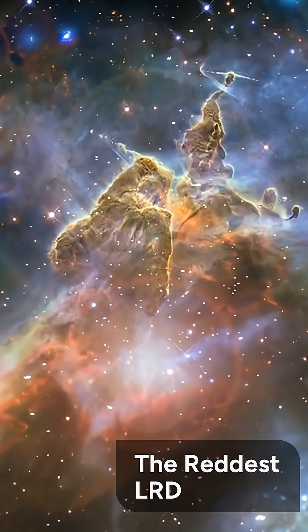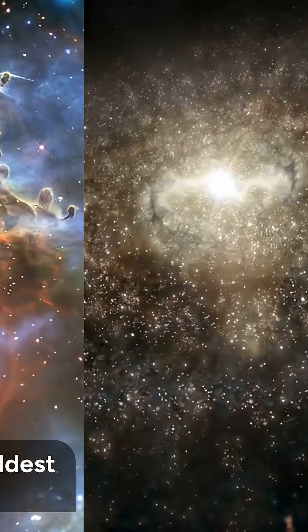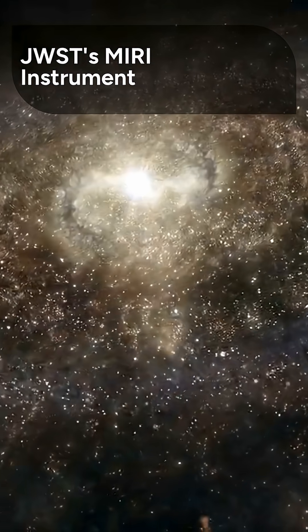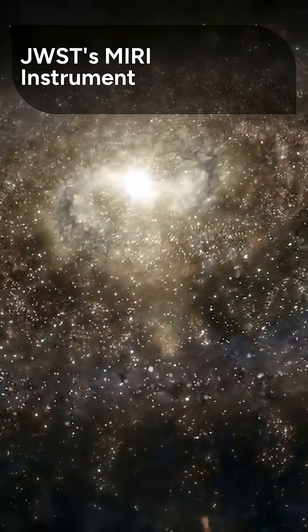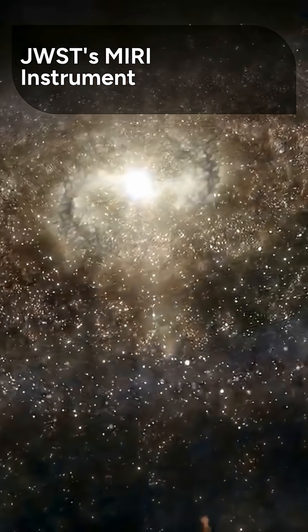Remarkably, Virgil is the reddest object found in the entire little red dot population discovered to date. The key to this discovery lies in the technology led by the University of Arizona, specifically the James Webb Space Telescope's Mid-Infrared Instrument, or MIRI.